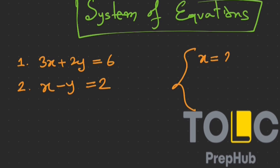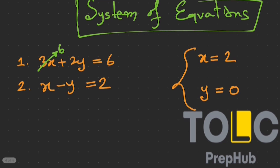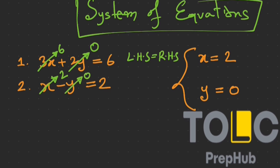Let's say for these two equations the value of x is 2 and y equals 0. If we substitute the value of x, the first term of the first equation becomes 3 times 2, and the second term becomes 2 times y, which is 0, so the total is 6. Therefore 6 equals 6 — left hand side equals right hand side. Similarly for the second equation, x becomes 2 and y equals 0, and again left hand side equals right hand side.